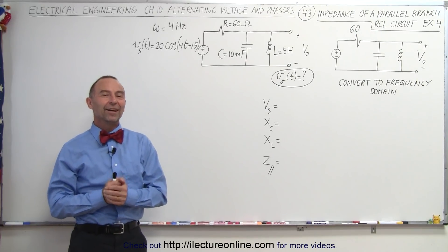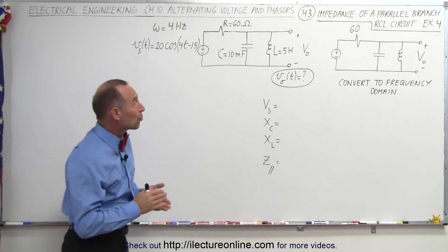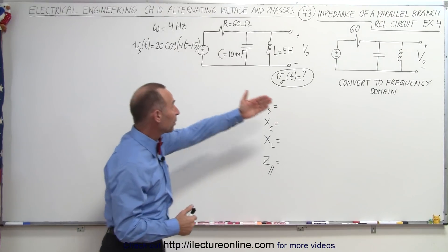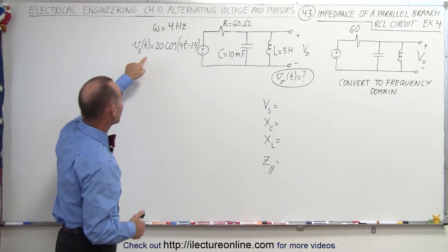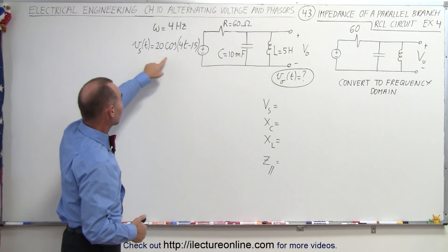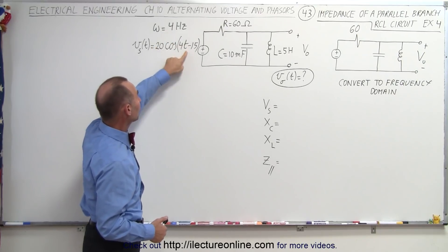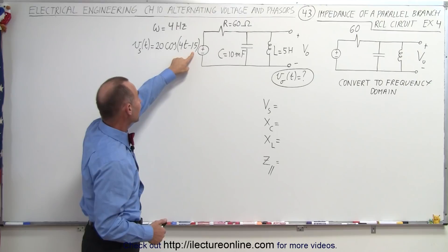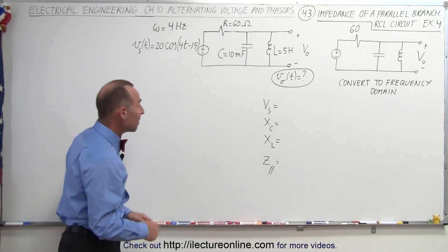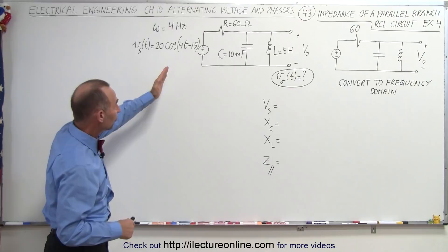Welcome to our lecture online. Our next example is trying to find the output voltage when we're given a particular input voltage. The input voltage of the source is time varying. It has a frequency of 4 hertz and a phase angle of minus 15 degrees, and we have a maximum voltage of 20 volts. That's the input voltage.